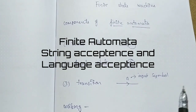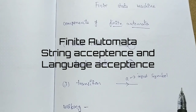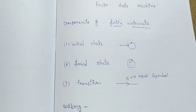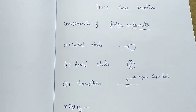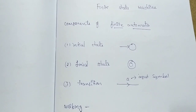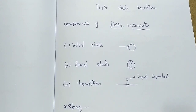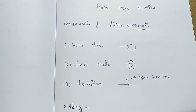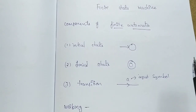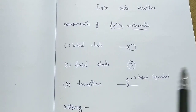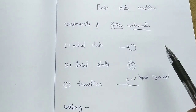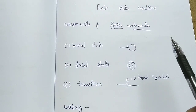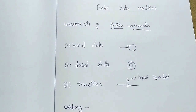Hi friends, welcome back. In the last class we studied about finite automata and kinds of finite automata. Now we are going to the actual basics of finite automata. Finite automata is the mathematical model of computation. In this video we are dealing with the basics of finite automata, how it works, the working of finite automata, the components of finite automata, and also the basics of pushdown automata.